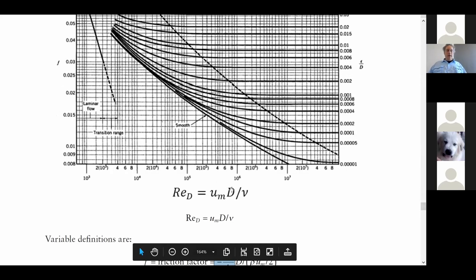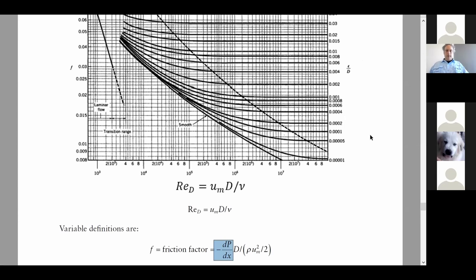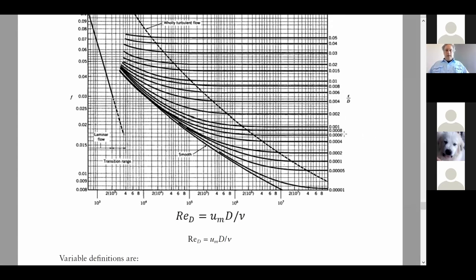See, because it's normalized. You don't have to have a separate graph for each diameter and each fluid. All combined in this beautiful one, maybe a little bit hard to understand at first, dimensionless graph here.